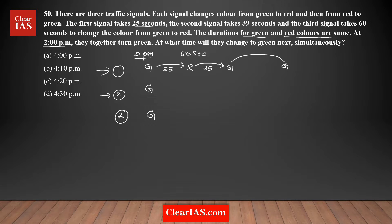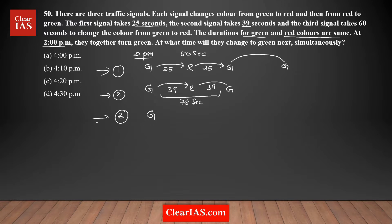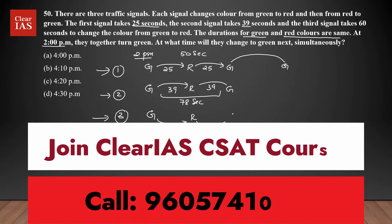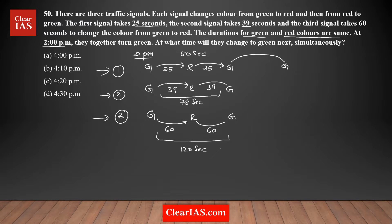For signal 2, it takes 39 seconds from green to red, then another 39 to change back — so 78 seconds total. Every multiple of 78, signal 2 will be green. For signal 3, it takes 60 seconds each way, so 120 seconds total. Every multiple of 120 — after 120, 240, 360 seconds — signal 3 will be green.